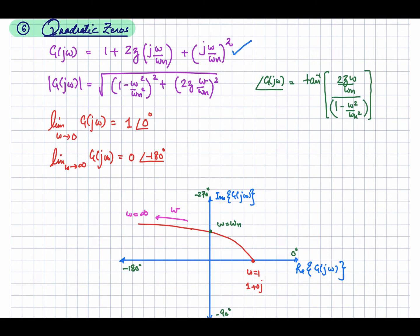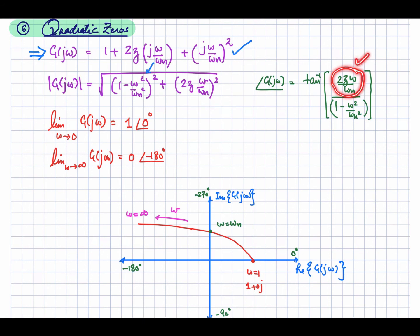Now consider a quadratic zero. The generic transfer function is 1 + 2*zeta*(s/omega_n) + (s/omega_n)^2. Replacing s with j*omega gives the sinusoidal transfer function. The magnitude is the square root of (1 minus omega squared/omega_n squared)^2 plus (2*zeta*omega/omega_n)^2, and the phase is the arctangent of the imaginary part divided by the real part.